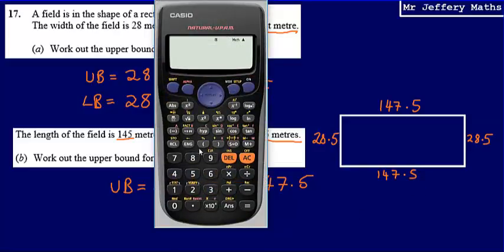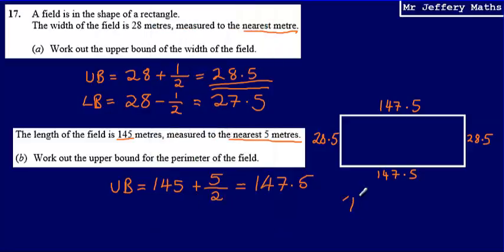So working this out, I'm just going to say that this is 2 times 147.5 plus 2 times 28.5. And so that gives me a perimeter of 352 metres. So my final answer for part B is going to be that the upper bound for the perimeter is 352 metres.